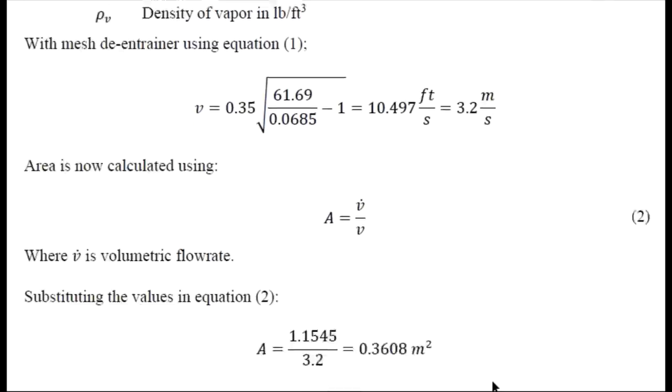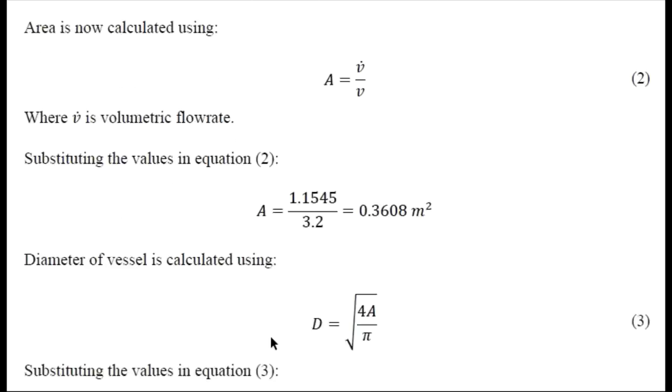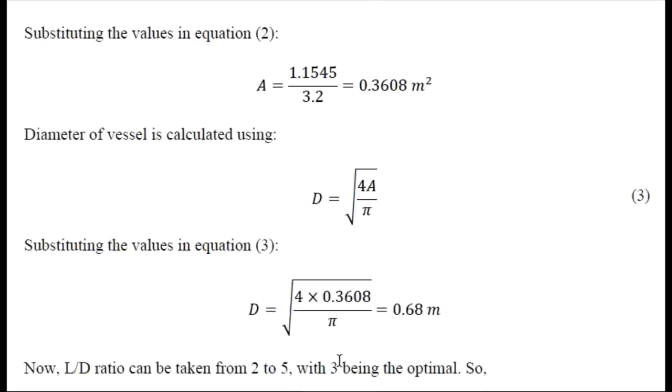Now to calculate the area we just need to divide the volumetric flow rate by vapor velocity. We can easily calculate the area of the separator and then diameter can be determined by pi by power d square, and we can rearrange it to get the diameter. We have obtained diameter as 0.68 meter.